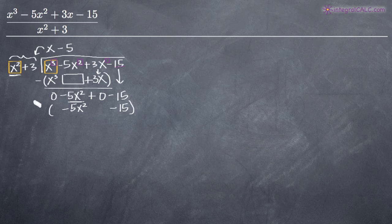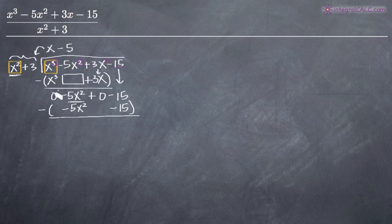again we can put parentheses in front here, put out our minus sign and subtract. Negative 5x squared minus a negative 5x squared is basically going to turn this into a negative 5x squared plus 5x squared which is zero. And then negative 15 minus a negative 15 is going to be negative 15 plus 15 which is going to be zero.